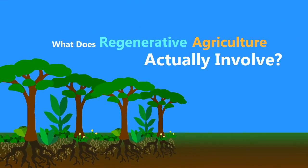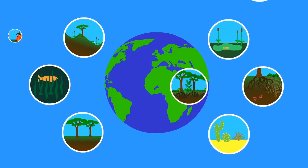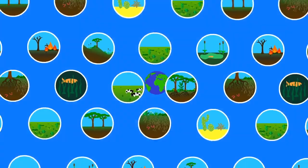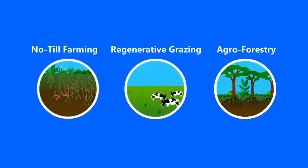So what does regenerative agriculture actually involve? Answering this question is pretty tricky, because the practices that work best largely depend on the land that's being worked with. The variety of different practices border on infinity, a bit more than this video can cover. However, let's look at three common forms that regenerative agriculture can take.